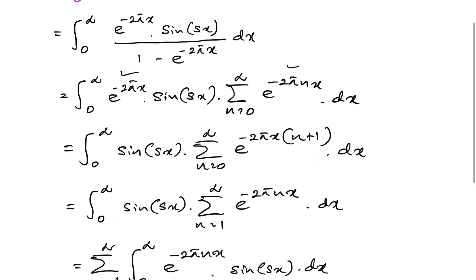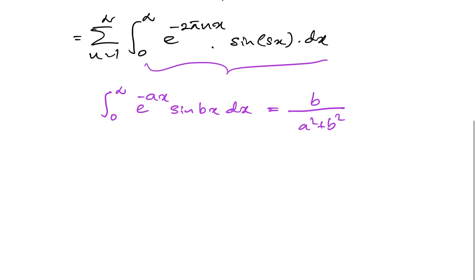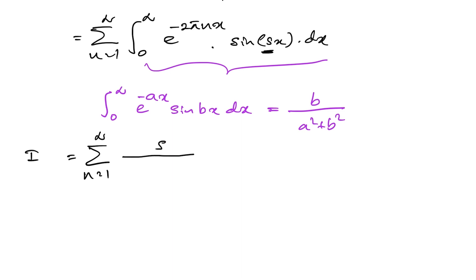So we can write our integral I as the infinite sum from n=1 to infinity. Here b = s and a = 2nπ, so each term is s over (4n²π² + s²).